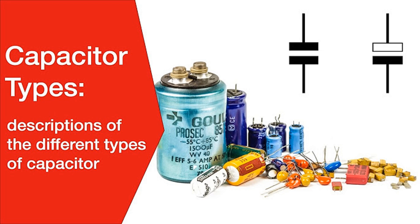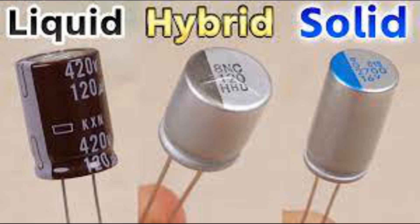In summary, surge capacitors are primarily used to protect equipment from voltage surges and transients, while filter capacitors are used to reduce electromagnetic and radio frequency interference in electrical systems and electronic devices. Both types of capacitors play crucial roles in maintaining the reliability, performance, and safety of electrical and electronic systems.